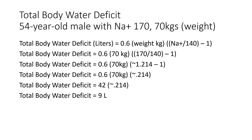Plugging in all variables, the total body water deficit equals 0.6 times 70 kilograms times 170 over 140, minus 1. 170 over 140 is approximately 1.214. Take 1.214 minus 1, which is approximately 0.214.